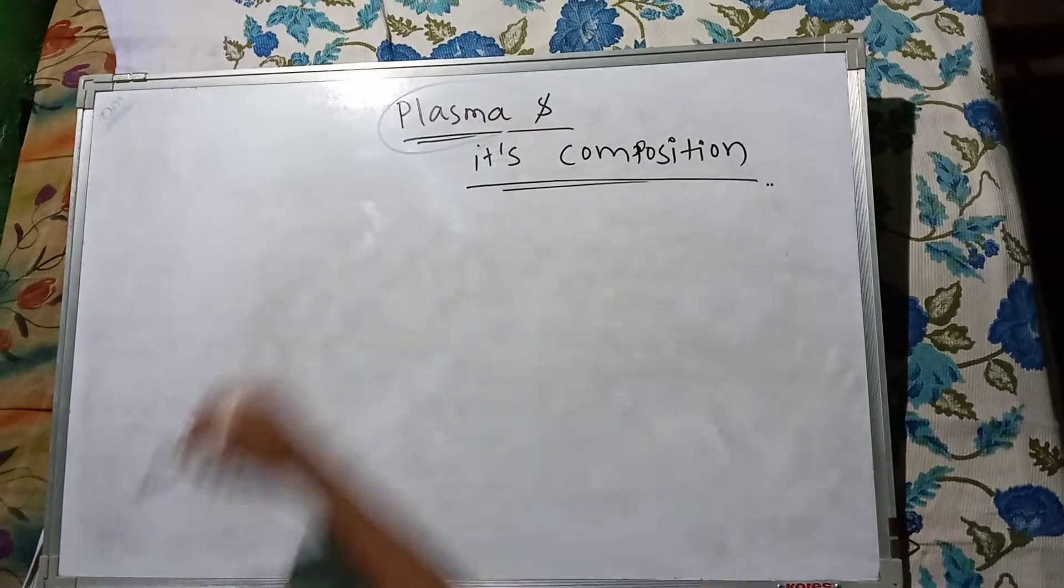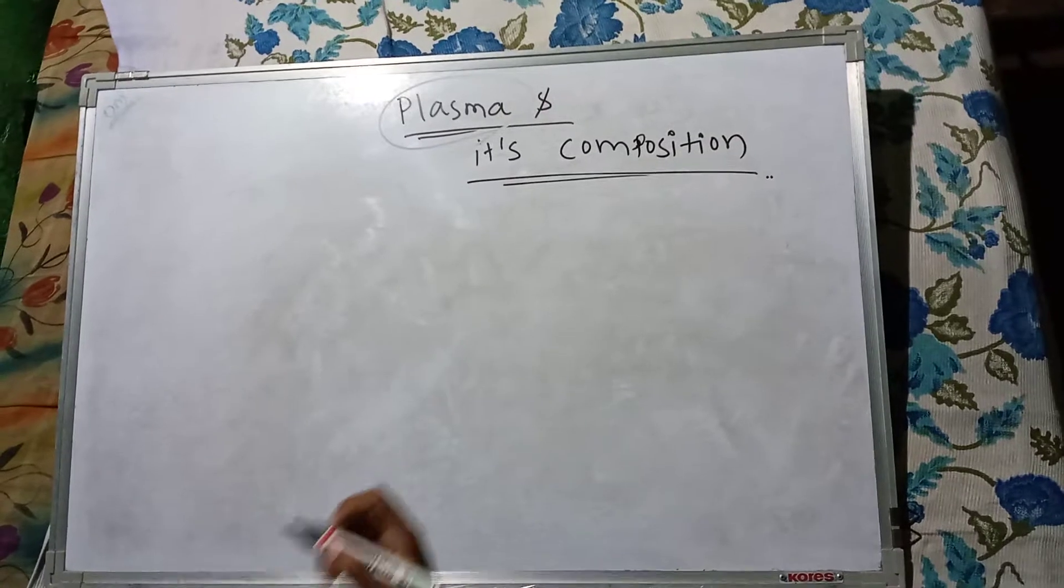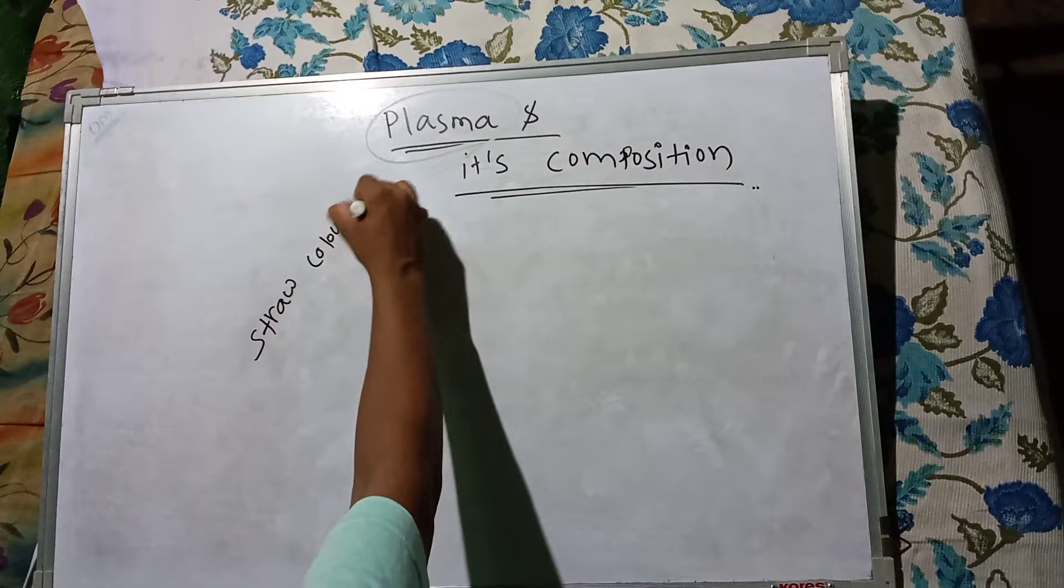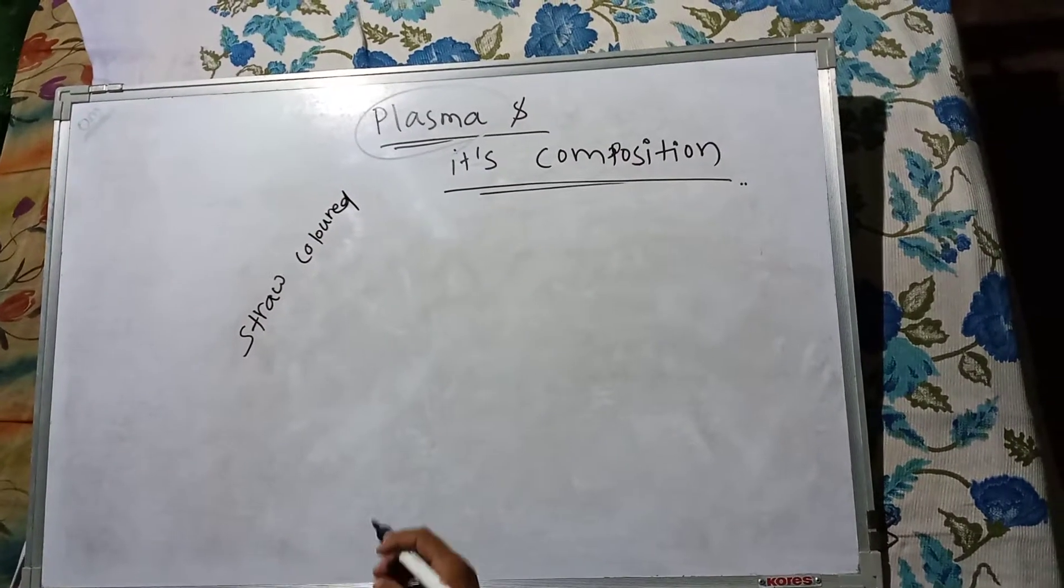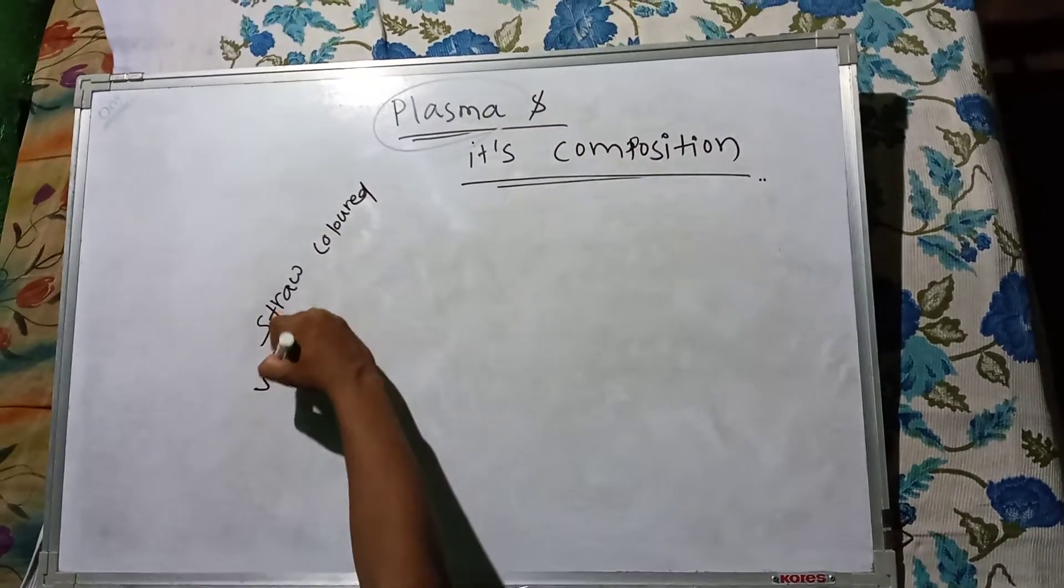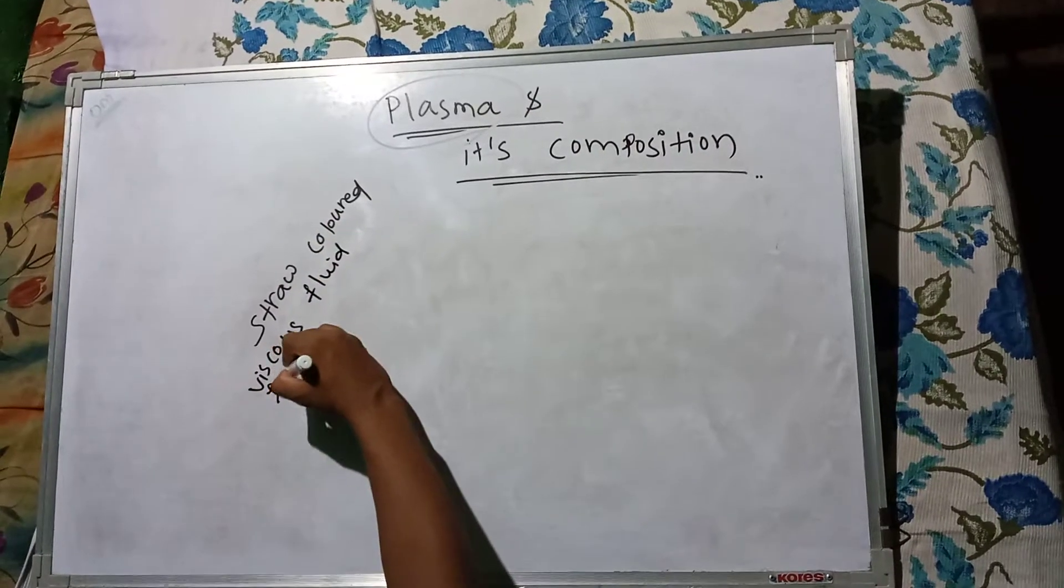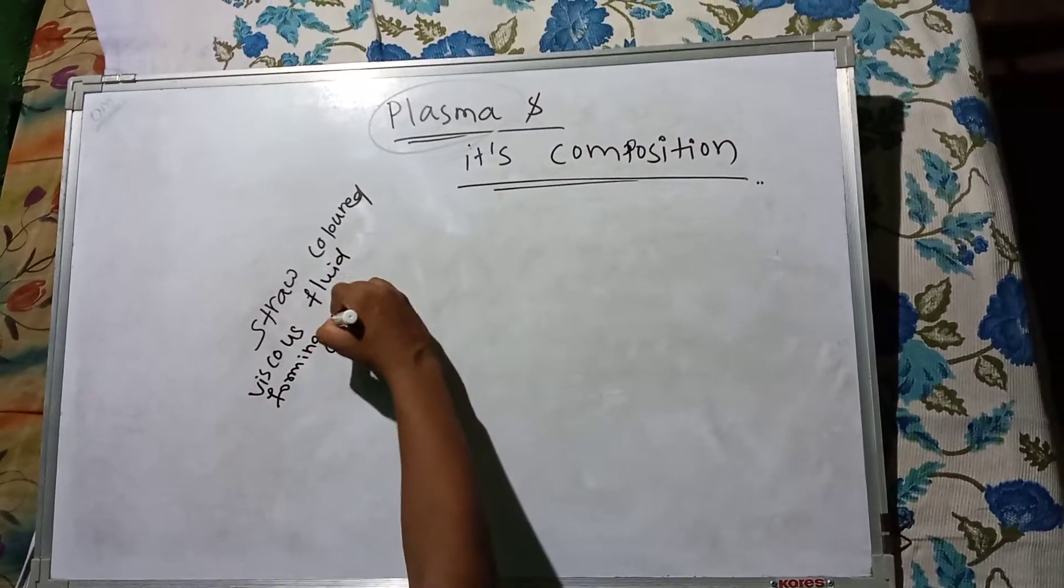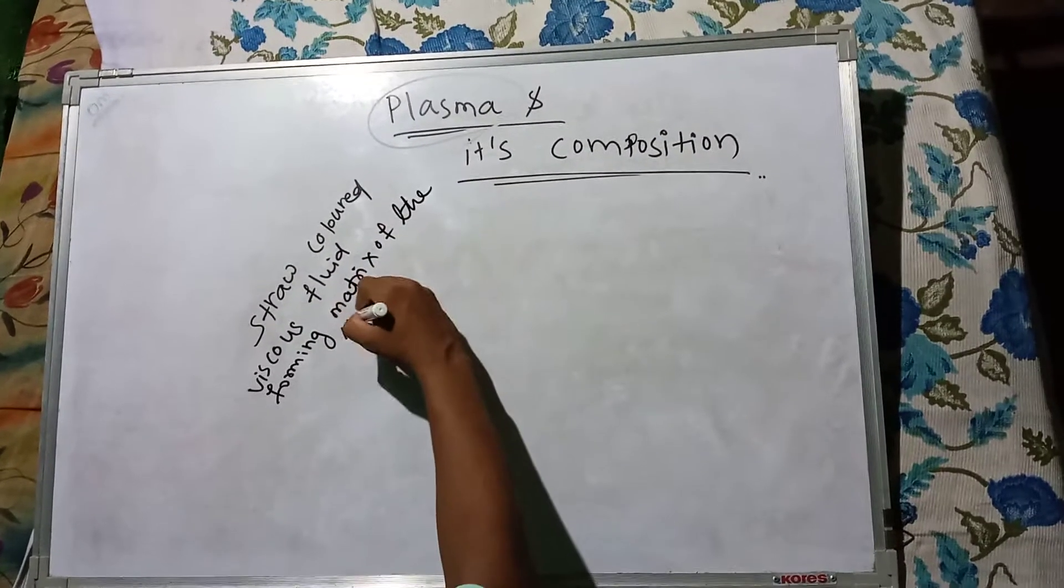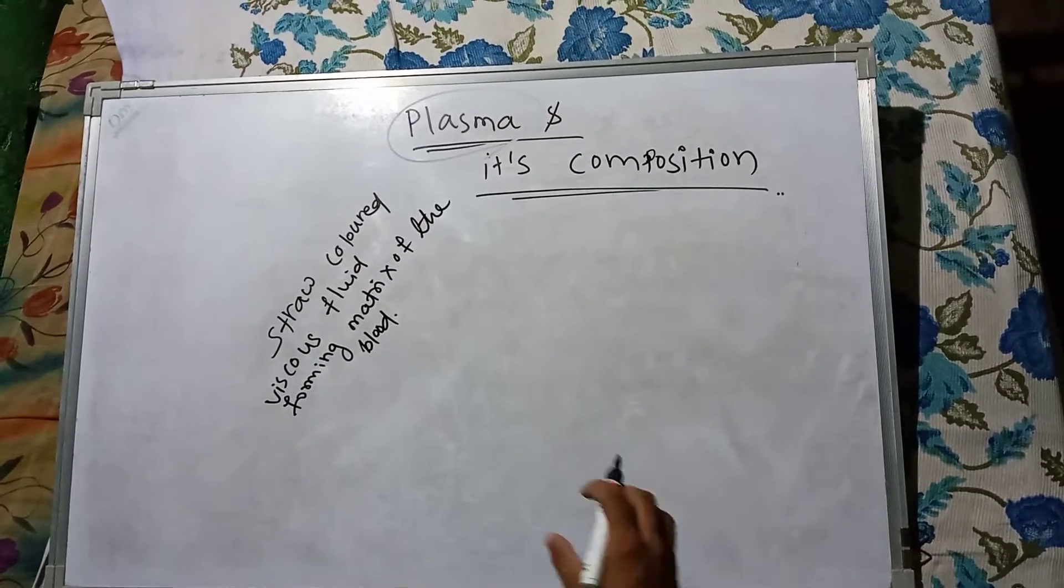Plasma is a straw-colored viscous fluid forming the matrix of the blood. The matrix is the ground substance of a tissue, or a non-living substance occupying the space between cells.